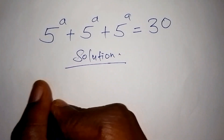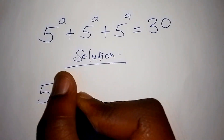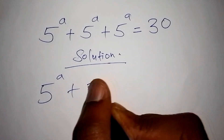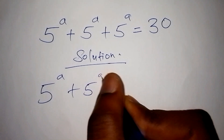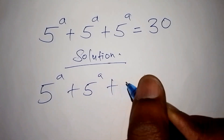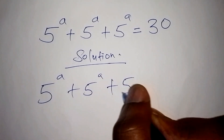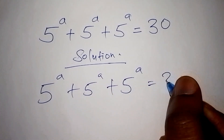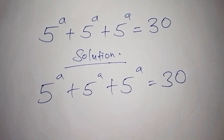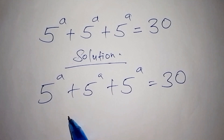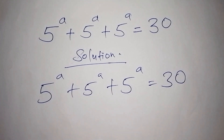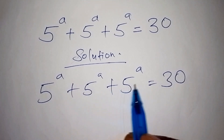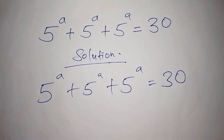We have 5 to the power of a, plus 5 to the power of a, plus 5 to the power of a, is equals to 30. What we need to do is factorize 5 to the power of a plus 5 to the power of a plus 5 to the power of a.